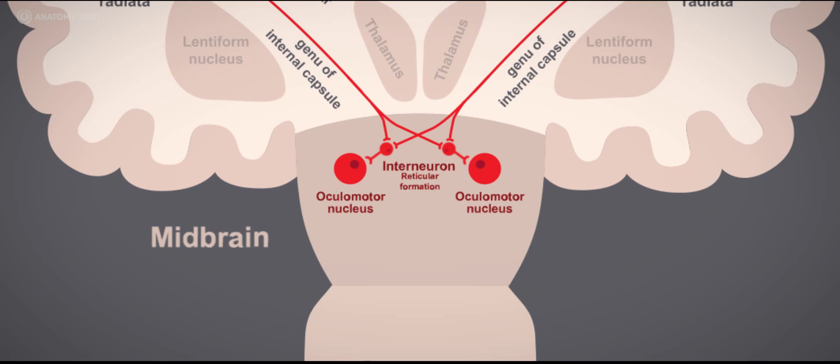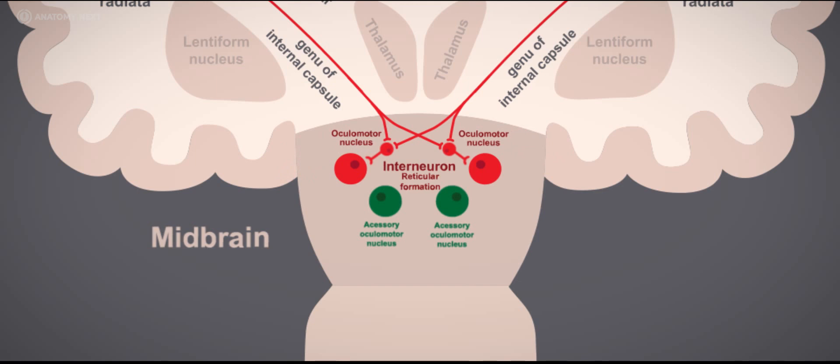But, as I mentioned in the beginning, the oculomotor nerve is a mixed nerve which also contains preganglionic parasympathetic fibers. These fibers arise from a completely different nuclei called the accessory oculomotor nuclei, more commonly known as the Edinger-Westphal nuclei.